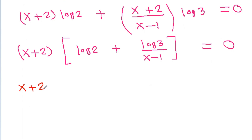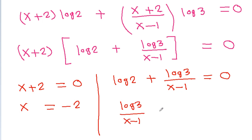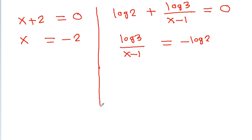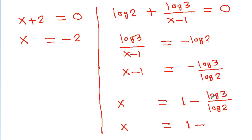So, either x plus 2 is equal to 0, giving x is equal to minus 2, or log 2 plus log 3 by x minus 1 is equal to 0. So log 3 by x minus 1 equals minus log 2, meaning x minus 1 equals minus log 3 by log 2. Therefore x equals 1 minus log 3 by log 2, which is 1 minus log base 2 of 3.